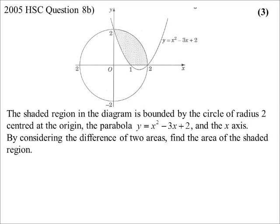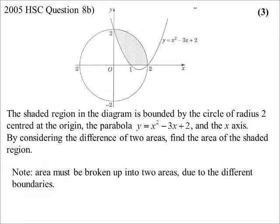Now a 2005 HSC question: a circle and a parabola, but notice the region is also bounded by the x-axis, so we can't simply do top minus bottom throughout. The hint says 'by considering the difference of two areas.' The reason we need to split it up: the boundaries change as you move from left to right. From the left: circle minus parabola — then at x equals 1, it becomes circle minus x-axis. So we need a new integral at that point.